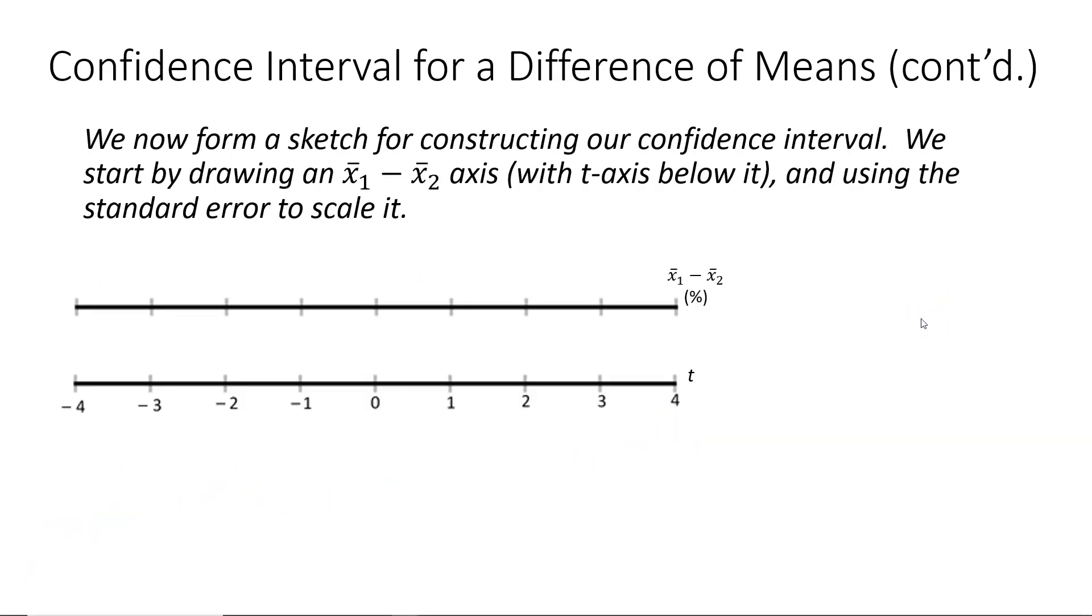The next part of the calculate step is to start forming a sketch for constructing our confidence interval. We start by drawing the difference of sample means axis with a t-axis below it. Notice I've also shown the units as being percent for the difference of sample means. I'm going to put at the center of the scale the difference of the two sample means that we calculated, the point estimate. Then I'm going to scale upwards by units of standard error. I go up four standard errors and then I go downward to the left four standard errors until I've completely scaled the variable axis.